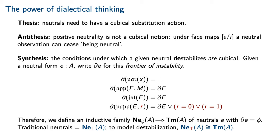Therefore, we may define an inductive family of neutrals with frontier of instability phi. Traditional neutrals, which are totally stable, are recovered in the case that phi is false.